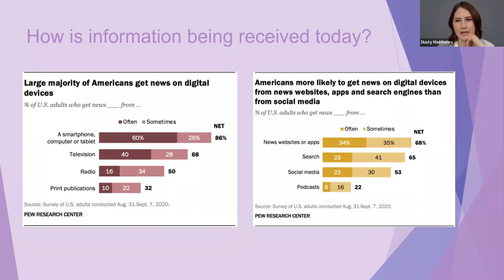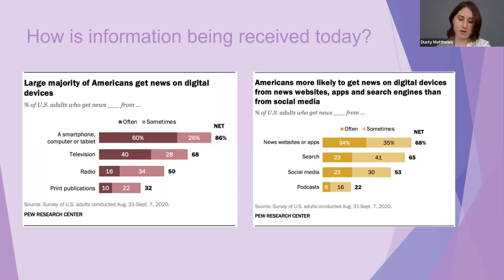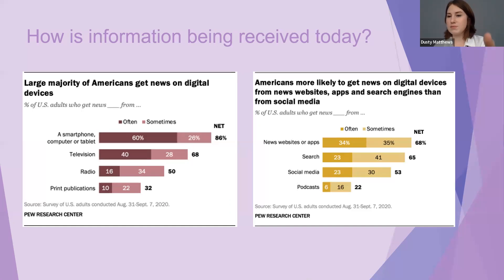Americans are primarily getting their information using digital devices and getting their news directly from a news website or app. The quality of news received depends heavily on how credible the news website being accessed is. The same applies to those accessing information via search engine — ultimately you're directed to a news site, so if that website is not credible, the information itself has credibility issues too.